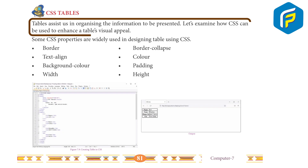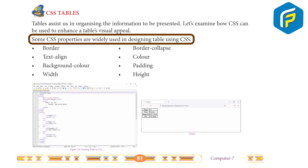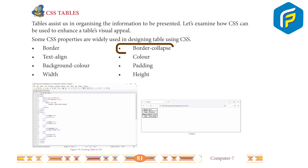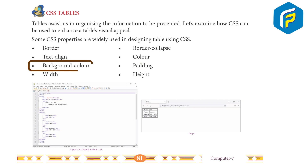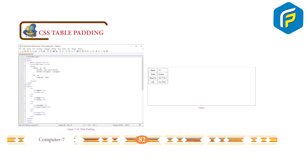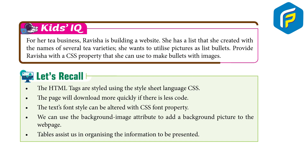CSS tables: tables assist us in organizing the information to be presented. Let's examine how CSS can be used to enhance a table's visual appeal. Some CSS properties widely used in designing tables are: border, border-collapse, text-align, color, background-color, padding, width, and height.